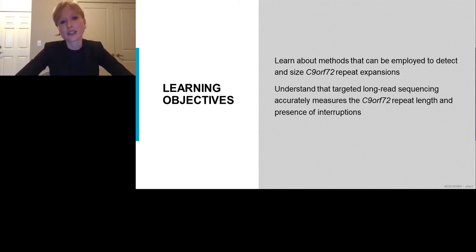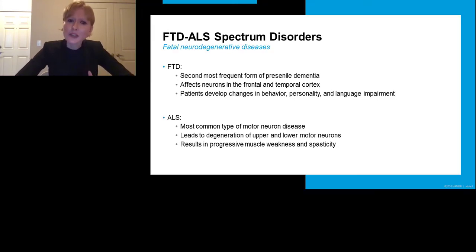A repeat expansion in C9ORF72 is associated with two fatal neurodegenerative diseases, namely FTD, frontotemporal dementia, and ALS, amyotrophic lateral sclerosis. FTD is the second most common cause of dementia in individuals below 65 years of age. It affects neurons in the frontal and temporal cortex, causing changes in behavior, personality, and language impairment. Patients often die within 7 to 11 years after the onset of symptoms.